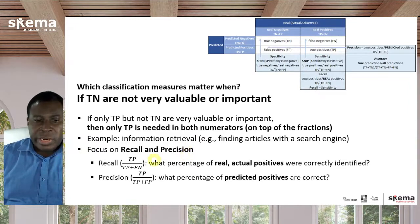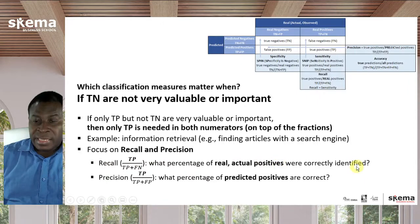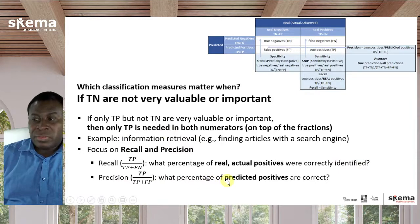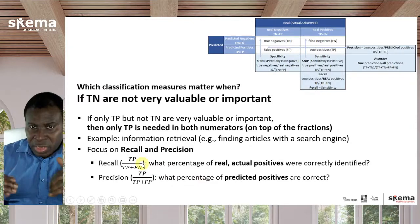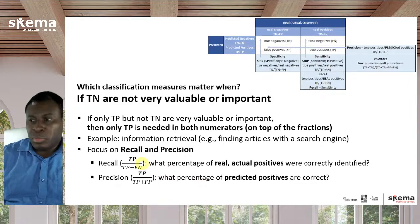In such scenarios, you focus on recall and precision. Recall focuses on what percentage of real actual positives are correctly identified, and precision focuses on what percentage of predicted positives are correct. In both cases, they focus on true positives from both sides and do not pay as much attention to true negatives, because that is not the most important thing in this particular business scenario.